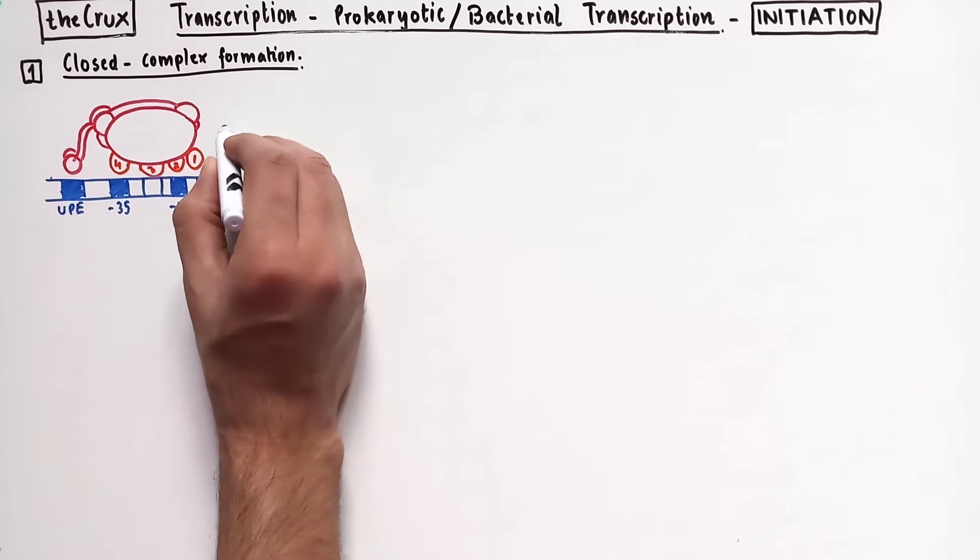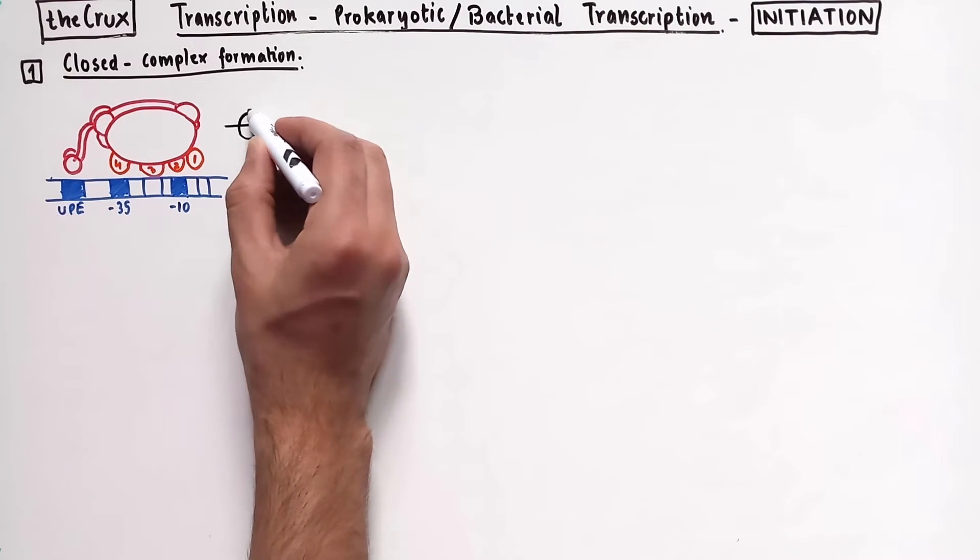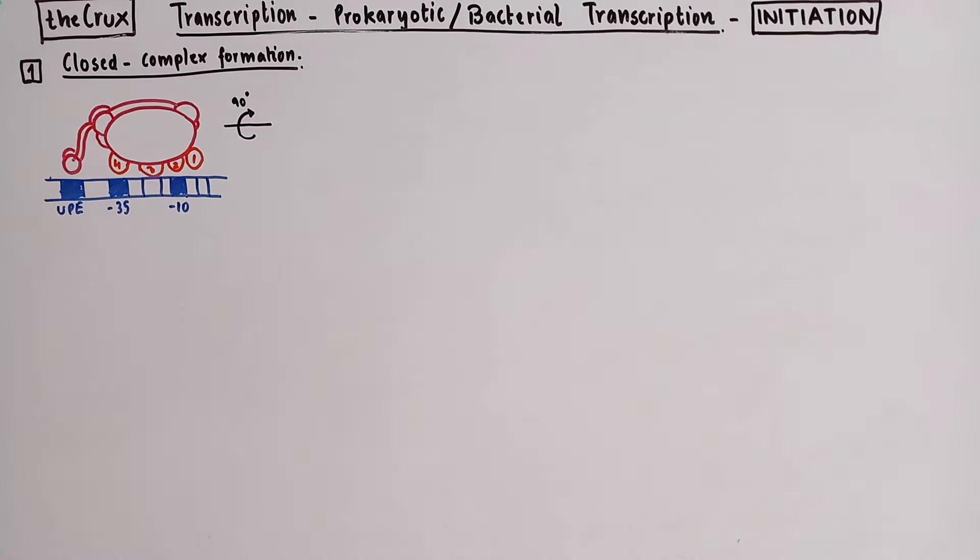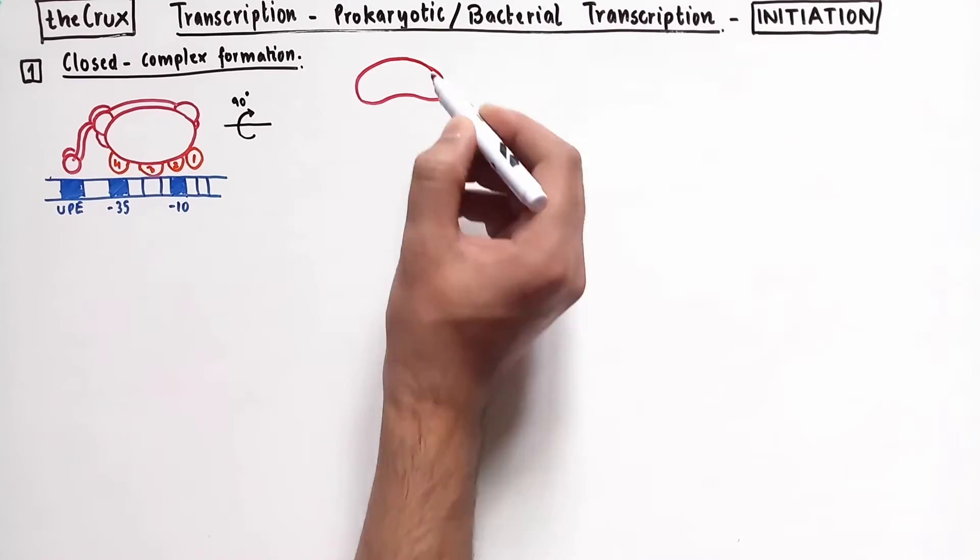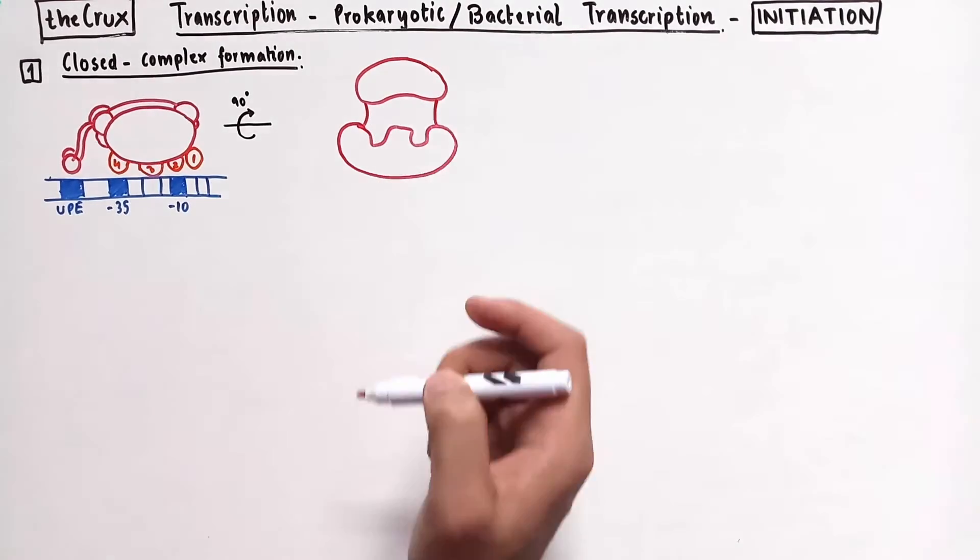To see this closed complex in detail, we will now focus on the main part of the holoenzyme by rotating the cartoon 90 degrees along the x-axis, just like you would rotate a kebab on a grill. This gives us the bottom view.